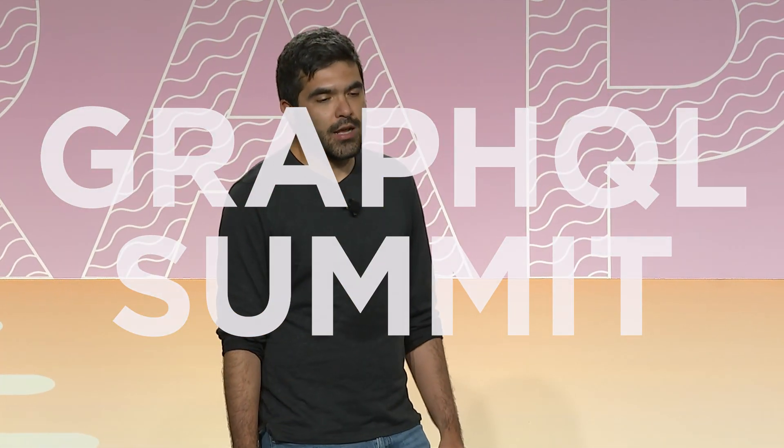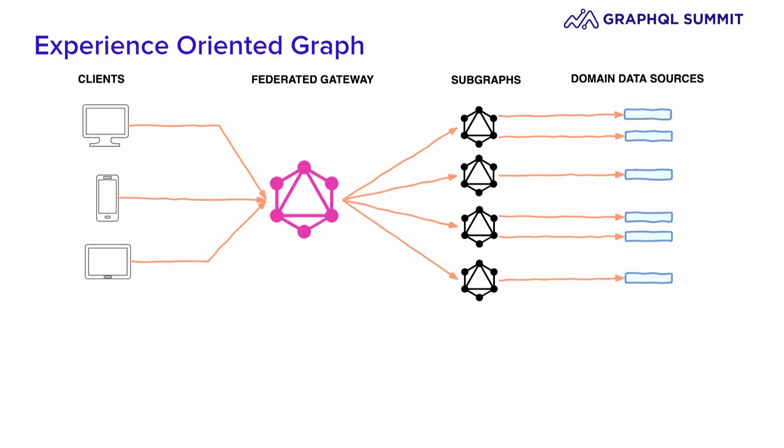I would like to talk about how we do GraphQL at Xperia Group. We use an experience-oriented graph. An experience-oriented graph follows the same architecture as a federated gateway, where we have clients, the federated gateway, subgraphs, and our domain data sources. Clients will try to access experiences using a well-defined design system. We are representing UI types and experiences.